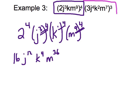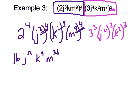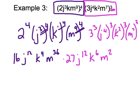Let's tackle the other part of the problem next. That 3rd power from the outside of the parentheses will apply to everything, giving us 3 to the 3rd power, times j to the 4th to the 3rd power, times k squared to the 3rd power, times m to the 7th to the 3rd power. Imposing those powers: 3 times 3 times 3 is 27, j to the 12th, k to the 6th, m to the 21st.